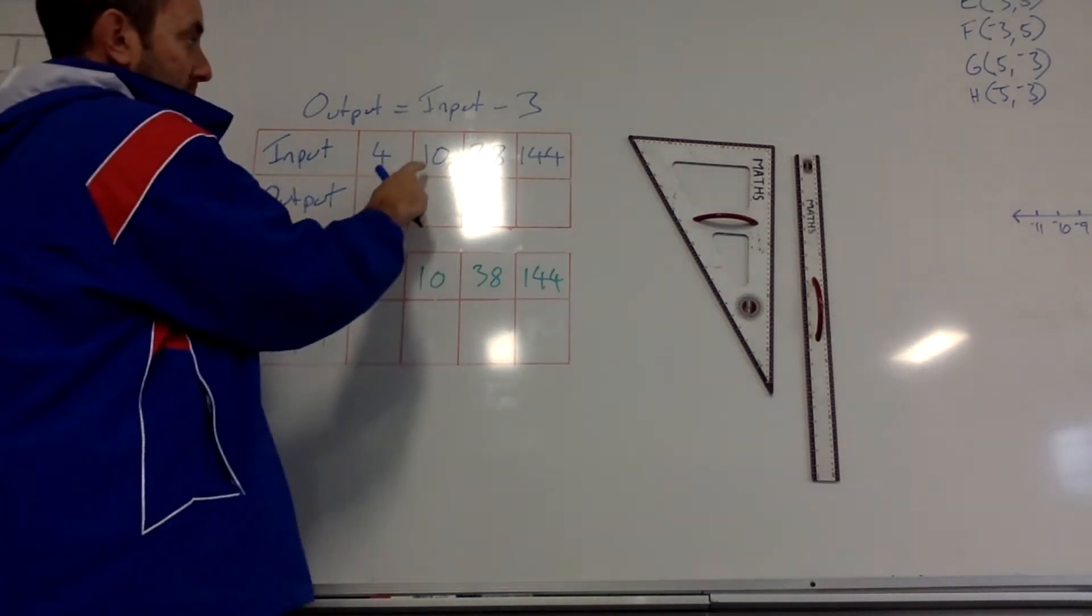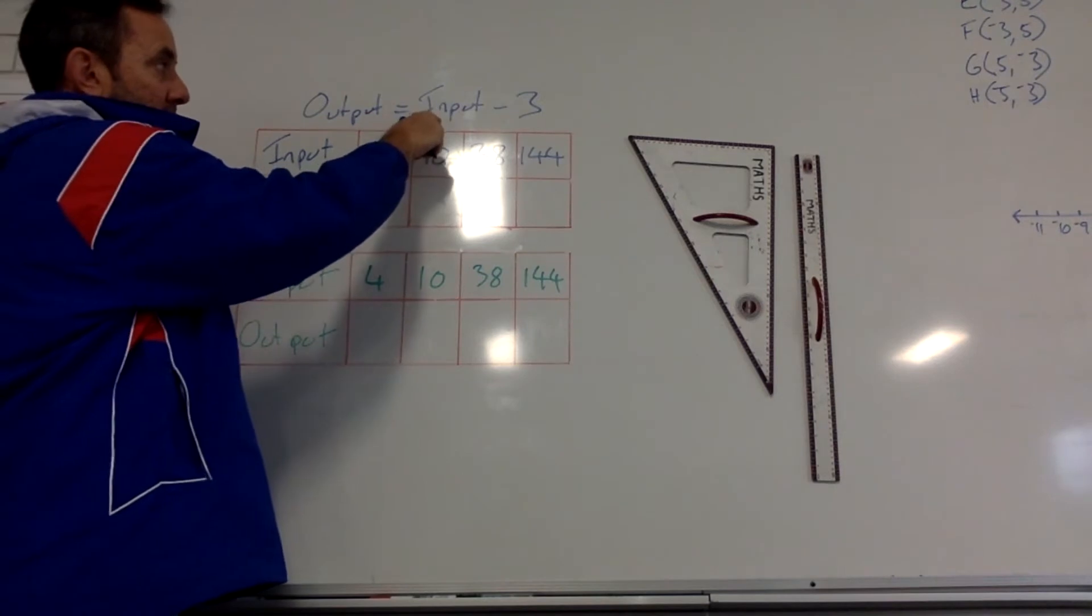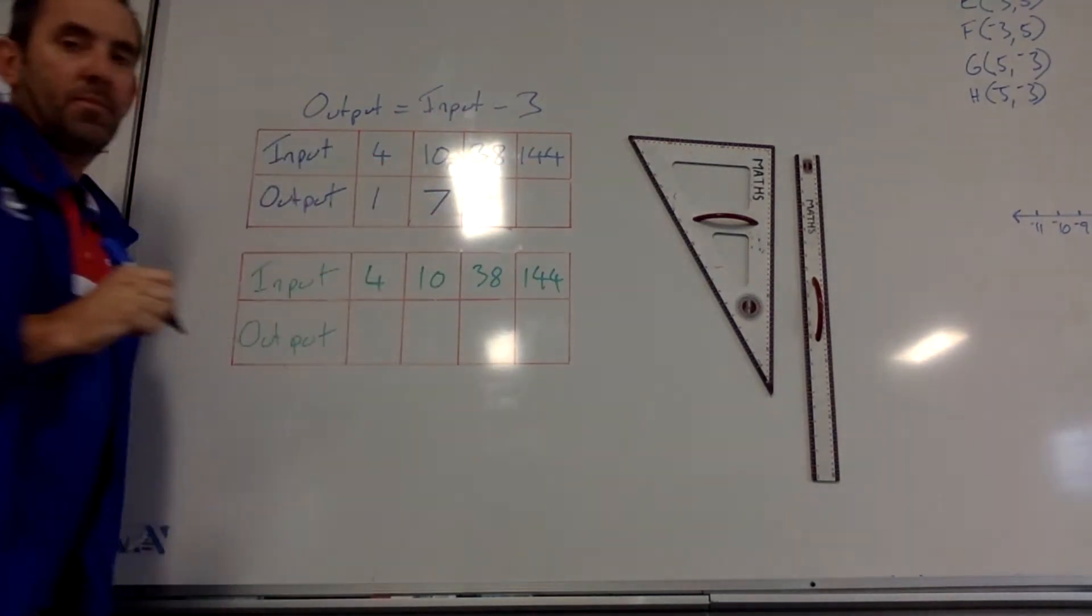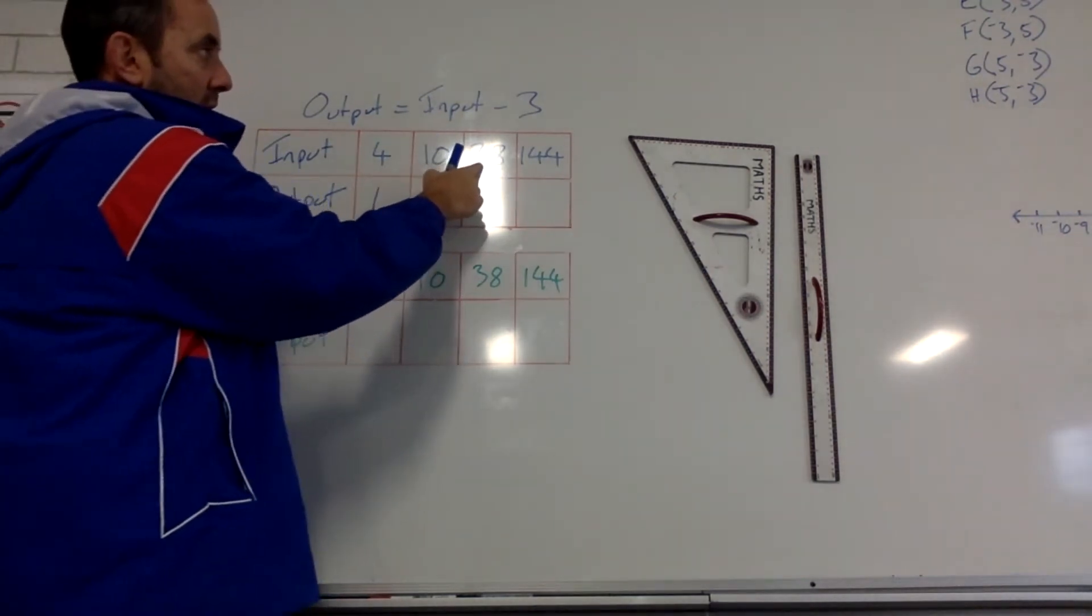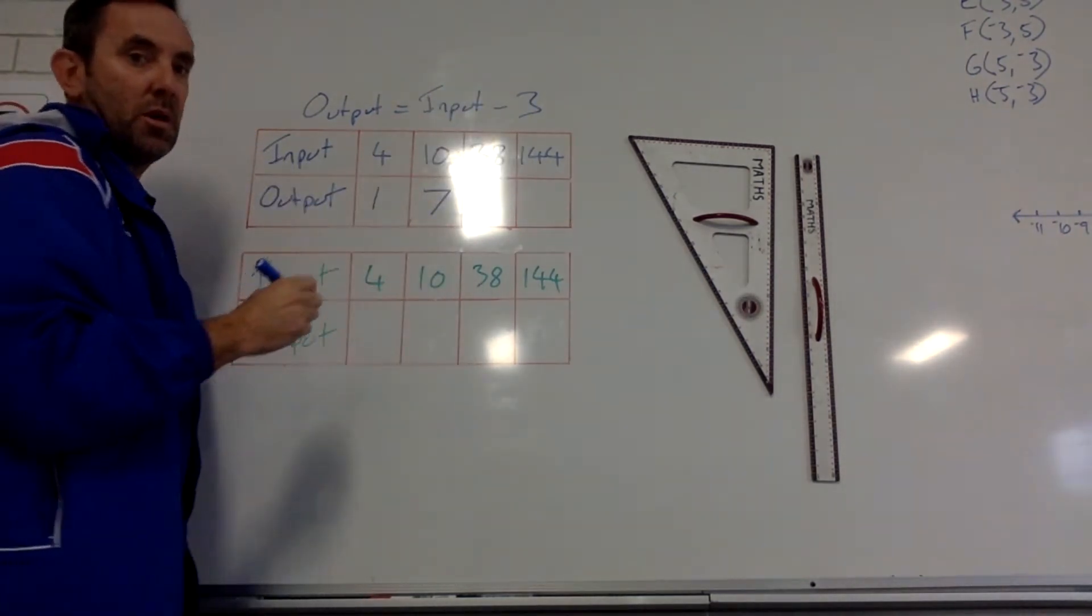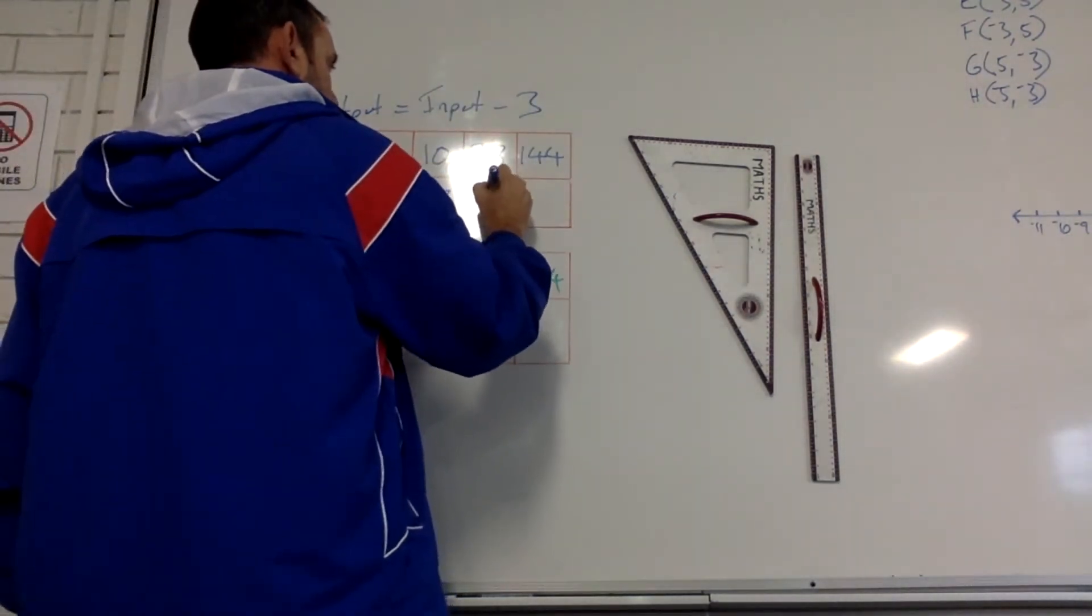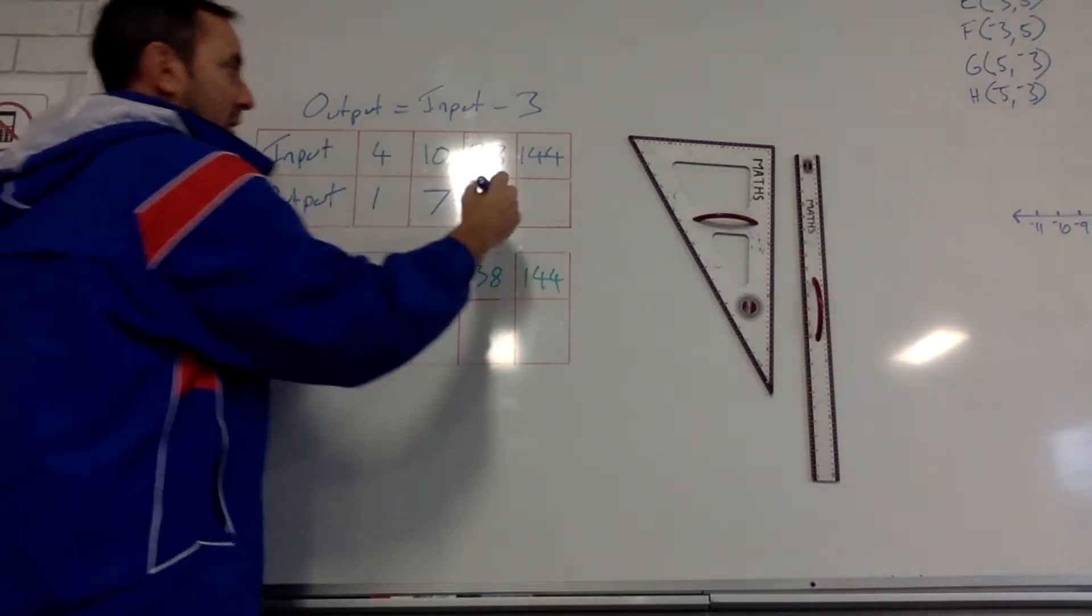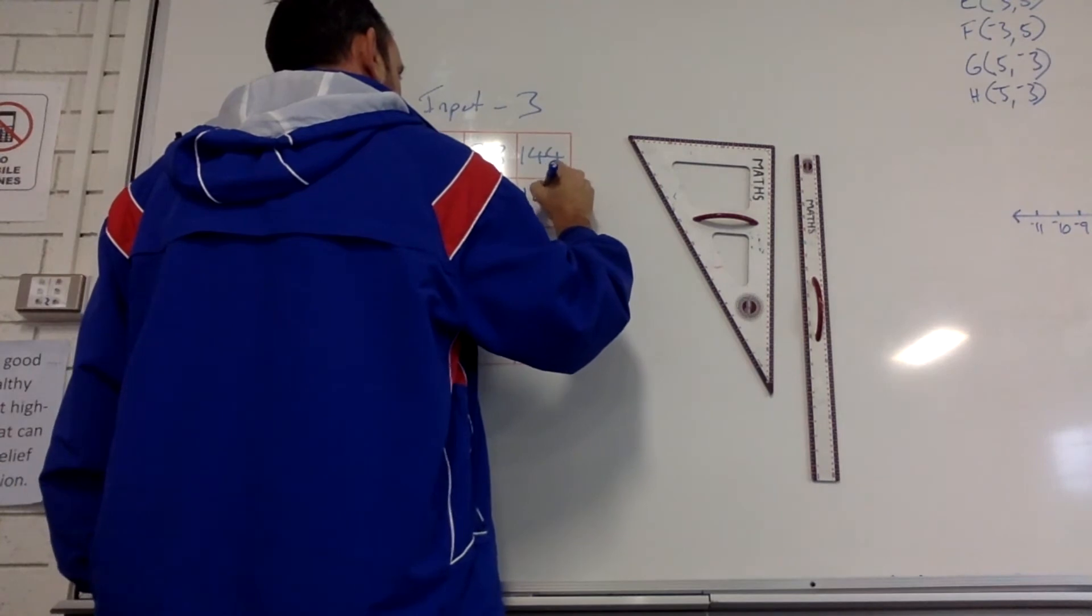Next one, 38, minus 3 is going to be 35. And 144, minus 3 is going to be 141.